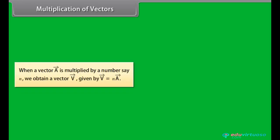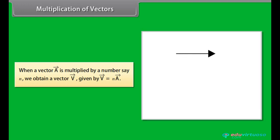Multiplication of vectors. When a vector a is multiplied by a number say n, we obtain a vector v given by V vector is equal to n into a vector. Let's take an example. If a vector a is multiplied by 2, the resultant vector 2a vector is in the same direction as a vector and has a magnitude twice of a vector.